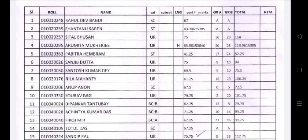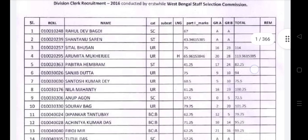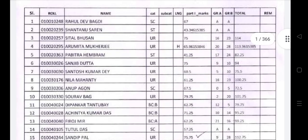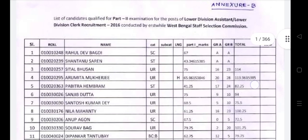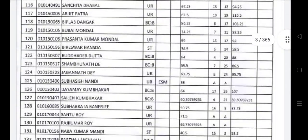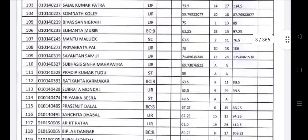The list includes language, Part 1 marks, Group A and Group B details. Group A is English, which is compulsory, and Group B is the native language — Hindi, Bengali, Urdu, or Nepali — which are also compulsory languages. The complete list runs to 366 pages and I will show you the exact list.